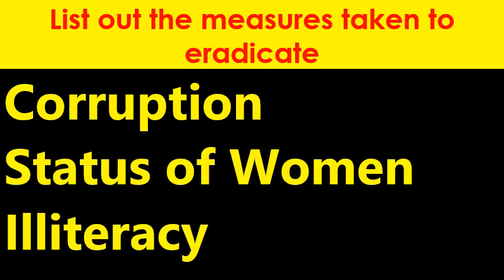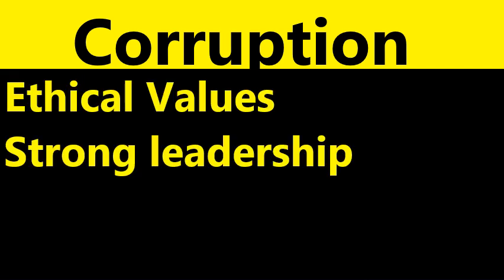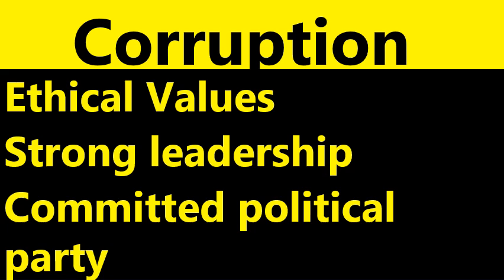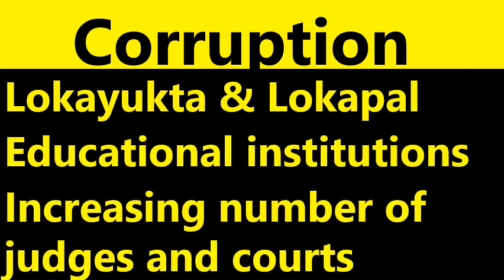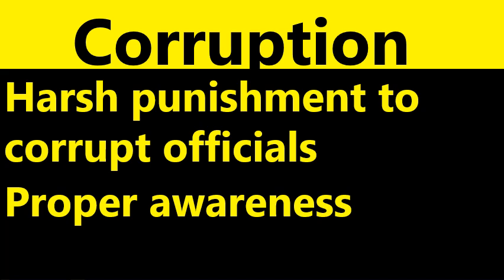Corruption, status of women and illiteracy are challenges, and the government of India and Karnataka tried their best to fight them. For corruption: ethical values, strong leadership, committed political parties, Lokayukta and Lokapal institutions, educational institutions, increasing the number of judges and courts can weed out corruption. Harsh punishment to corrupt officials and proper awareness to the public are a few steps to fight corruption.